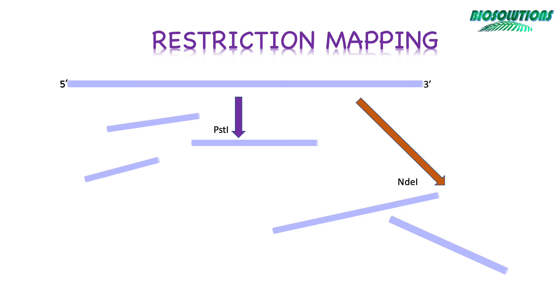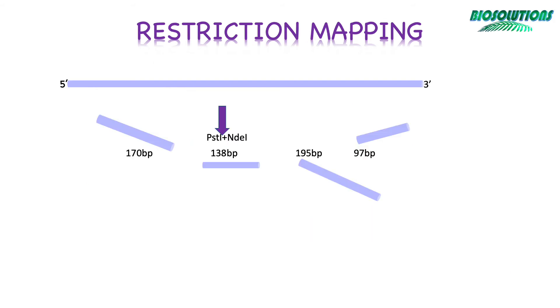Here, PstI produces three fragments of 170, 195, and 235 base pair sizes, and NdeI produces two fragments of 267 and 333 base pair sizes. If we cut the DNA fragment using both the enzymes together in a double digest, as we call it, we get four fragments of 97 bases, 138 bases, 170 base pairs, and 195 base pairs.